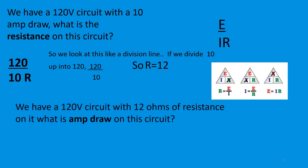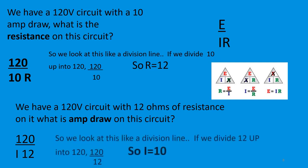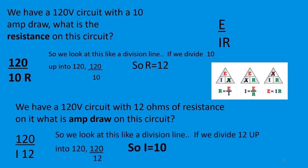If we have a 120-volt circuit with 12 ohms of resistance, what is the amp draw? You type in the knowns — voltage and resistance — and we're looking for amperage. We divide 12 up into 120, so I equals 10 amps.